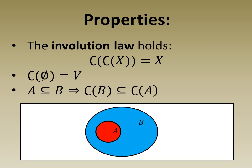Some properties of this unary operation are that the involution law holds, that is, the complement of the complement of X is X. The complement of the empty set is the universal set. Finally, if A is a subset of B, then the complement of B is a subset of the complement of A.